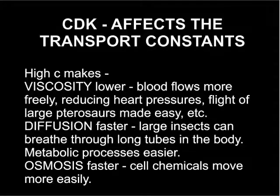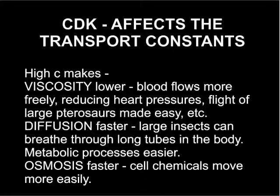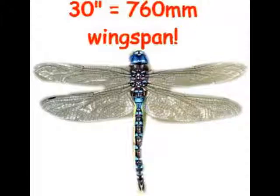Secondly, it affects the transport constants — viscosity, diffusion, and osmosis. This would put less strain on the body and heart, and man could live very much longer, even to the 900 years of the early patriarchs before the flood. Insects breathe by small tubules, and when C was high, air could diffuse easily through the small tubules in large insects, which they could not do today. Huge dragonflies with a 30-inch wingspan have been found in the fossil record.